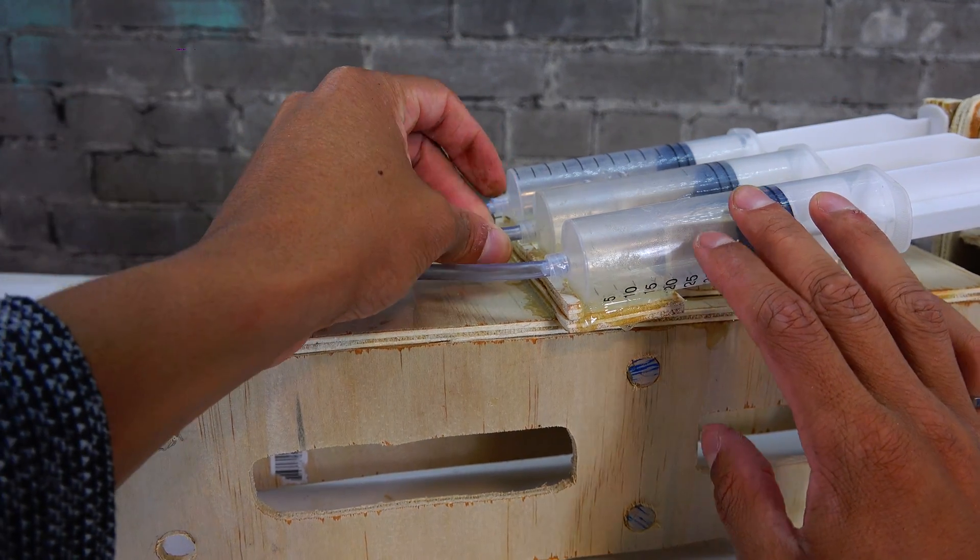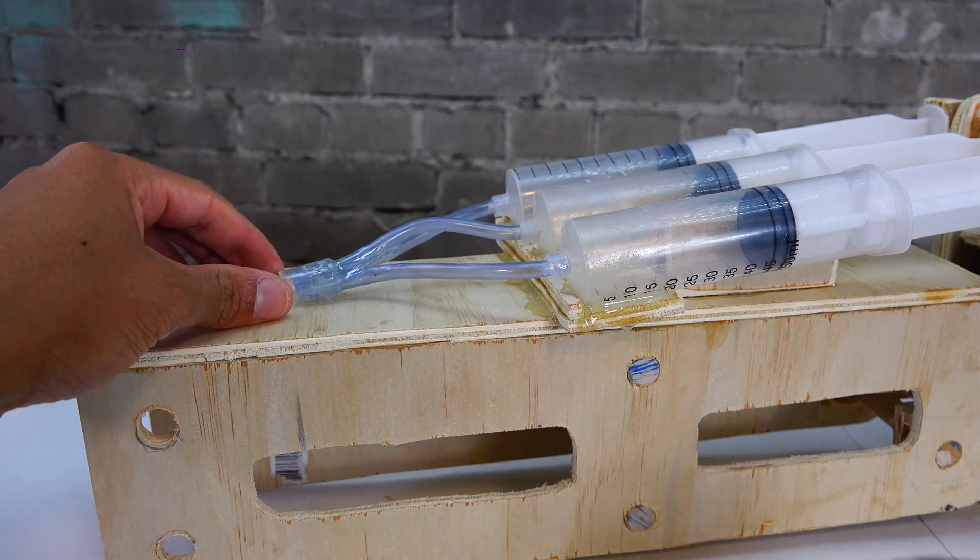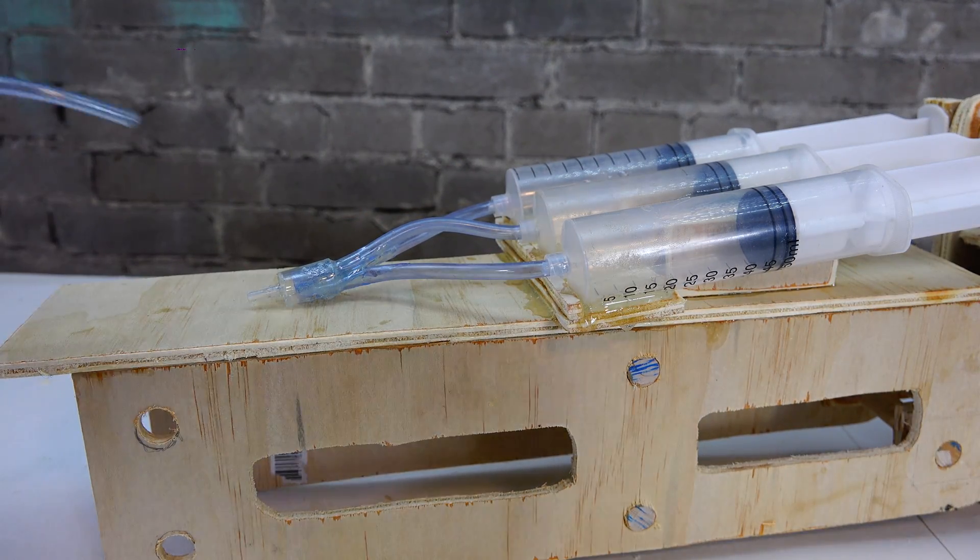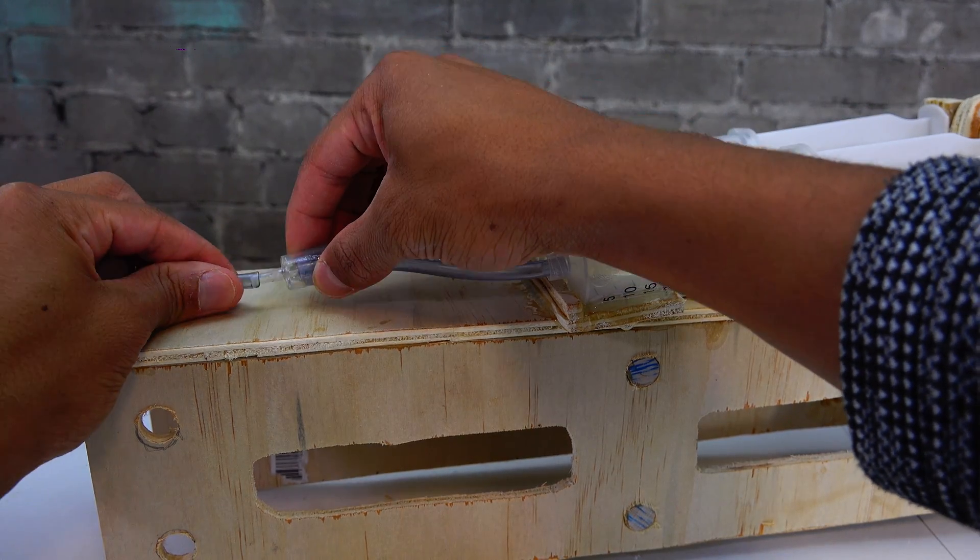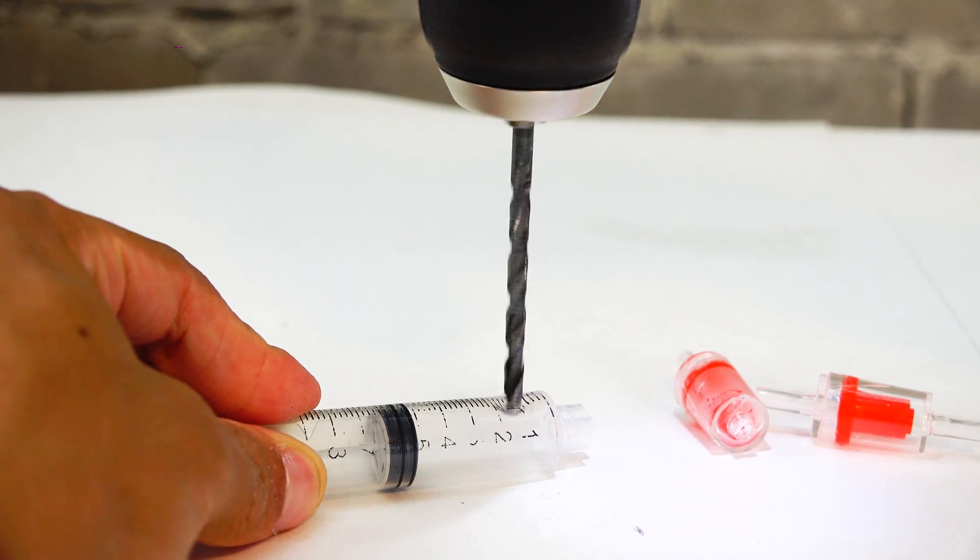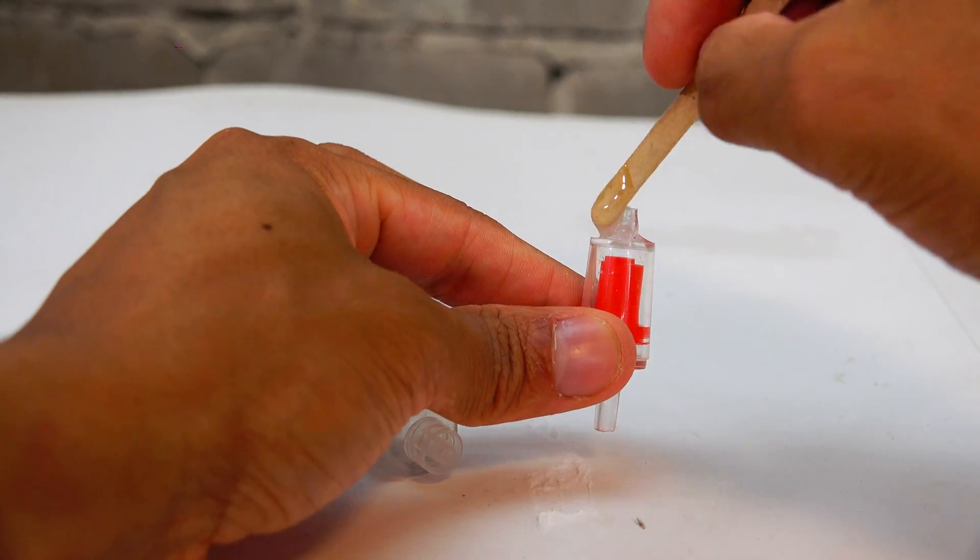When we have one small syringe pumping water into three large syringes it basically gives us a nine to one mechanical advantage because when we move that small syringe a little bit of distance the large syringes will move a ninth of that distance but with nine times as much force.